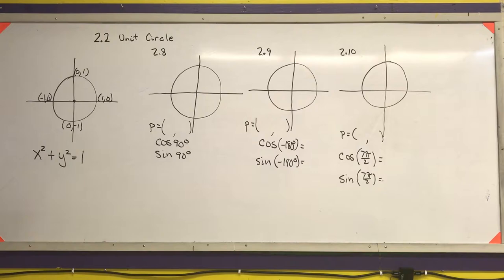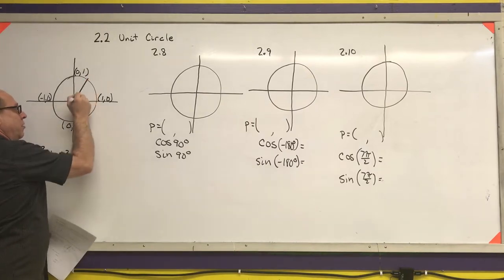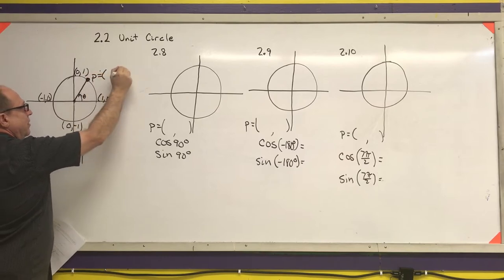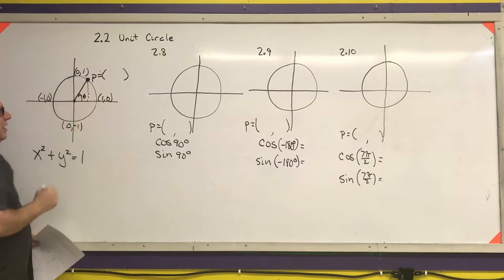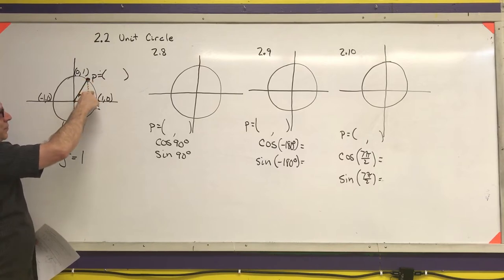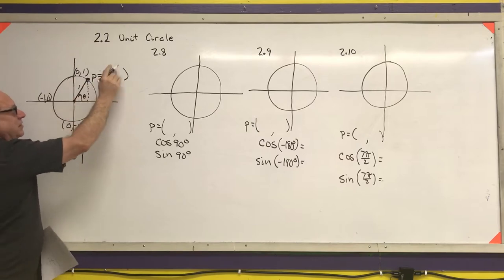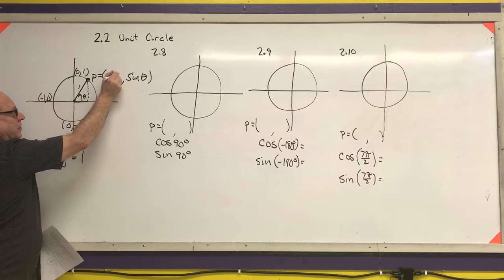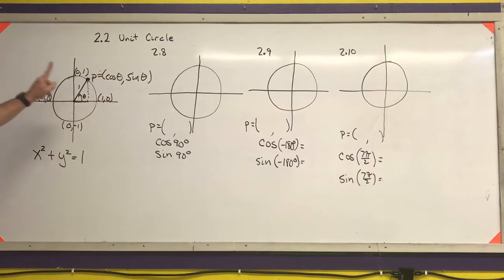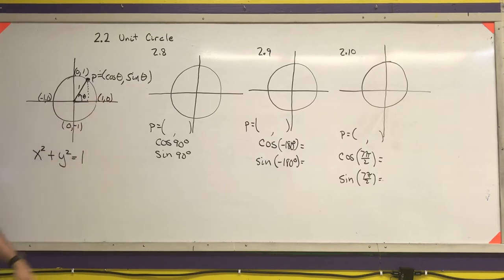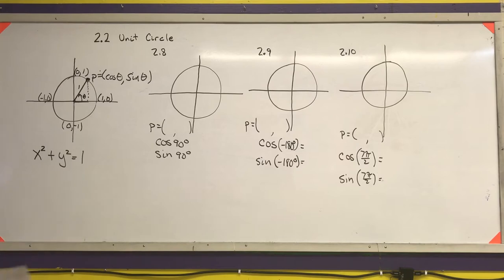If I draw any angle in standard position — I'll call it theta — it has coordinates I'll call point P. I can think about the right triangle formed. The y-distance is the sine of my angle and the x-distance is the cosine of my angle. So on a unit circle, the x-coordinate of any point is the cosine of that angle and the y-coordinate is the sine of that angle, as long as you're in standard position.